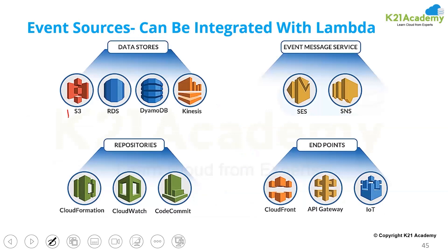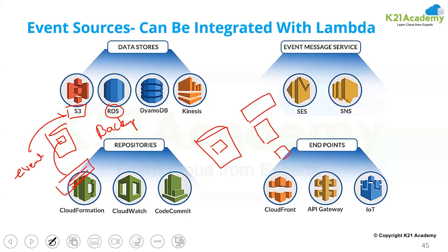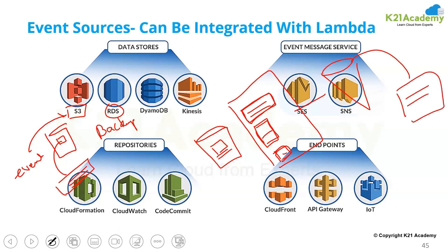Lambda can be used with many services. For a time-based trigger, you could schedule backups. Or when someone uploads an object to an S3 bucket, that is an event-based trigger. As soon as an object is uploaded, a task is required. For example, when a picture is uploaded to the bucket, it needs to be resized in three different sizes — for desktop, mobile, and tablet — so it can be used on a website.